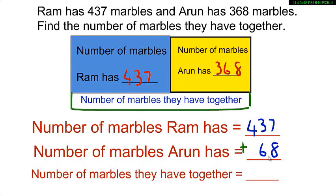Look carefully at the digits in the tens place. 7 plus 8 is 15. Remember to carry over 1 and write 5 below. 6 plus 3 is 9, and 9 plus 1 is 10.